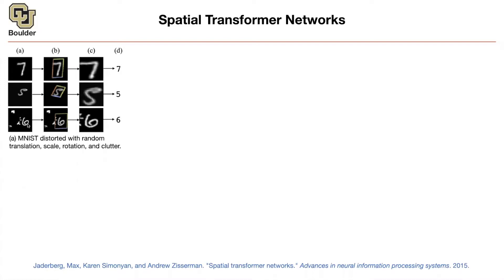It would be great to have a method that's able to focus — basically put a box around the object of interest. The box could be rotated, could be of different scales and sizes, and it could ignore the clutter. Once you do that, it's easy to translate and focus on number seven, focus on number five, focus on number six, and then the rest is just a simple convolution because we know convolutions are going to do a good job there.